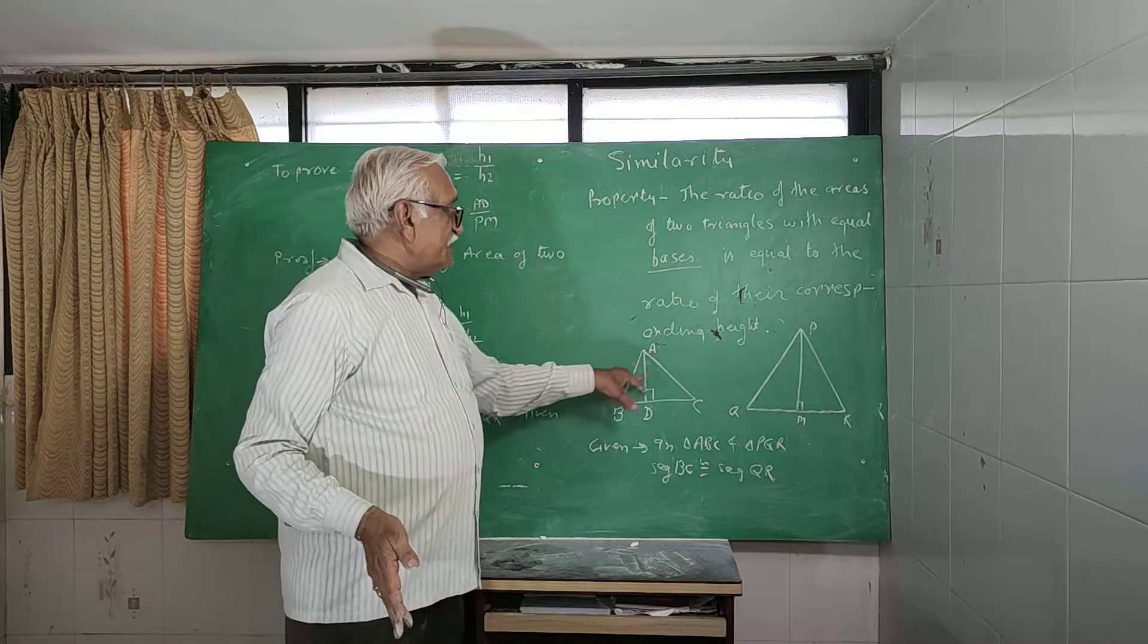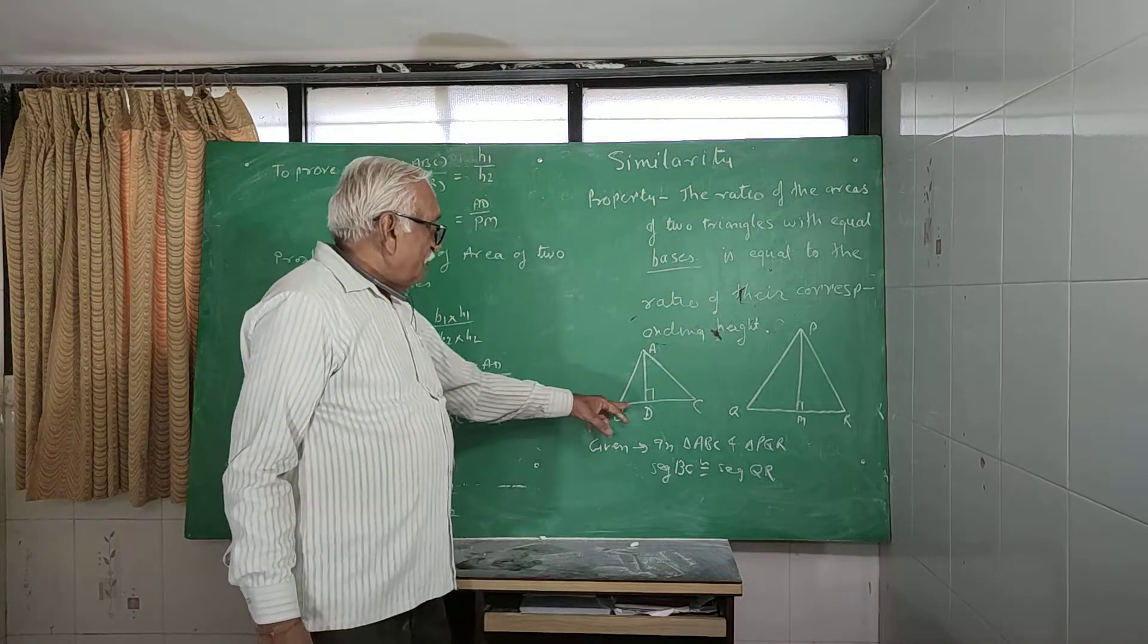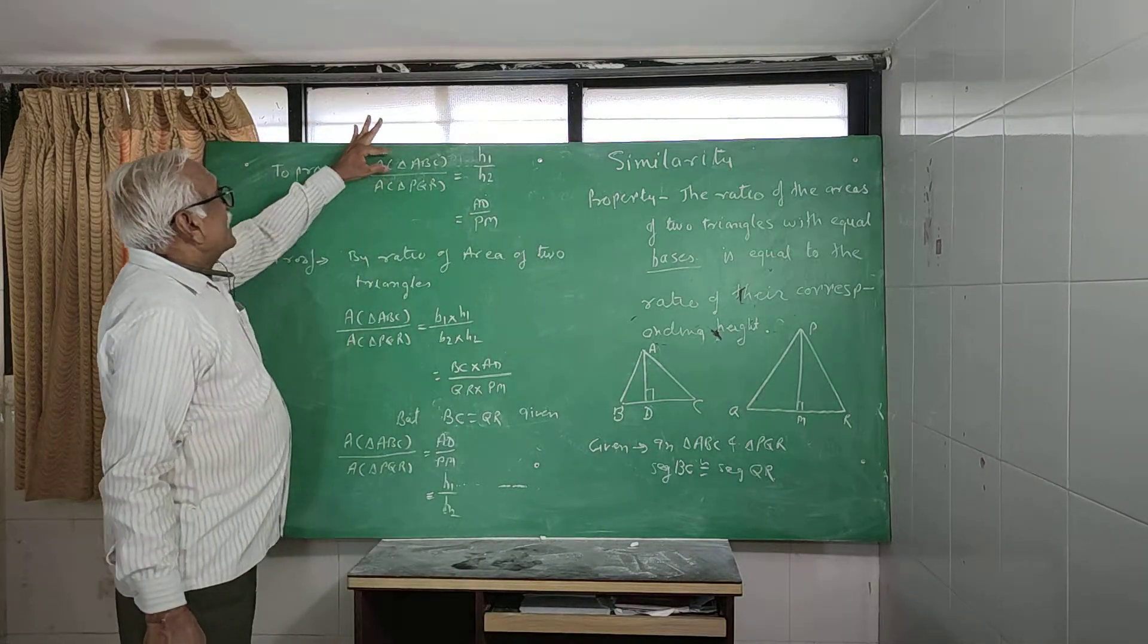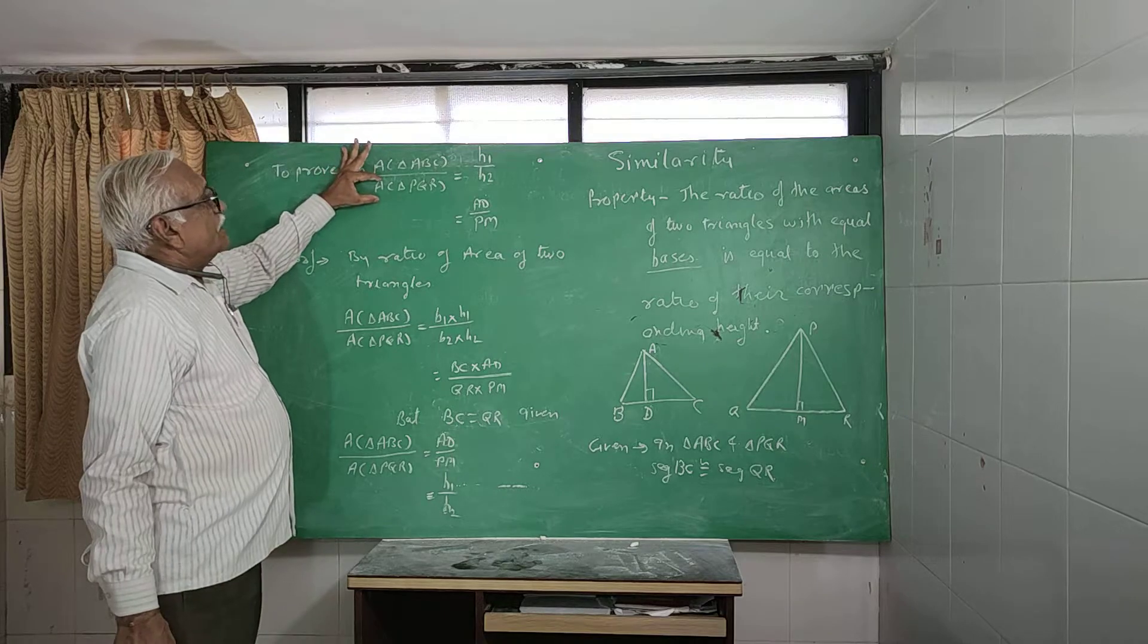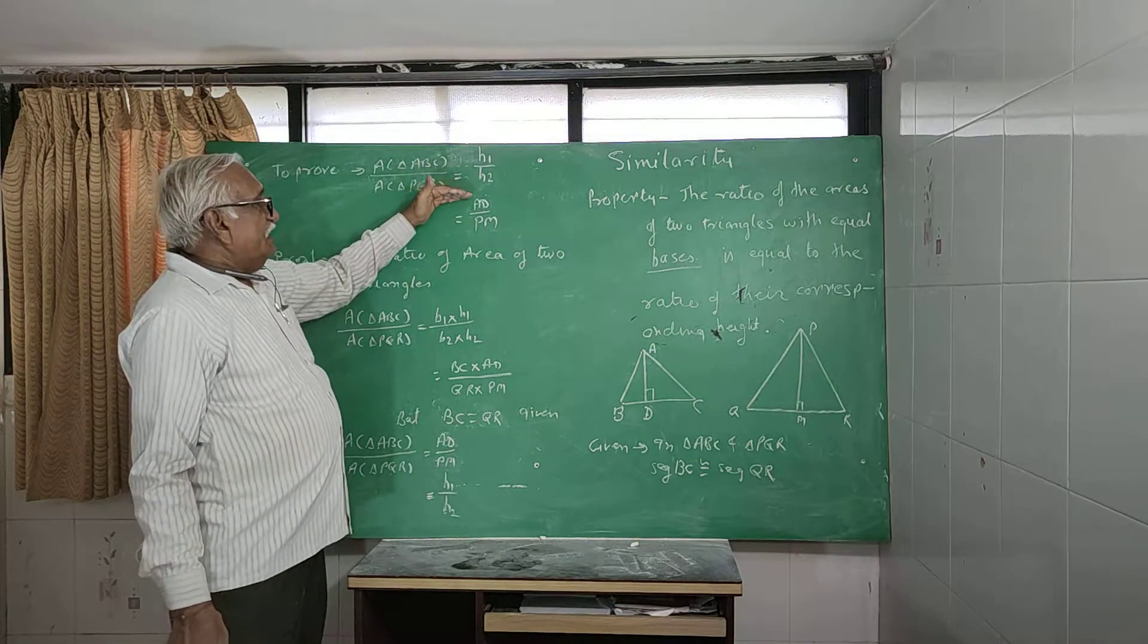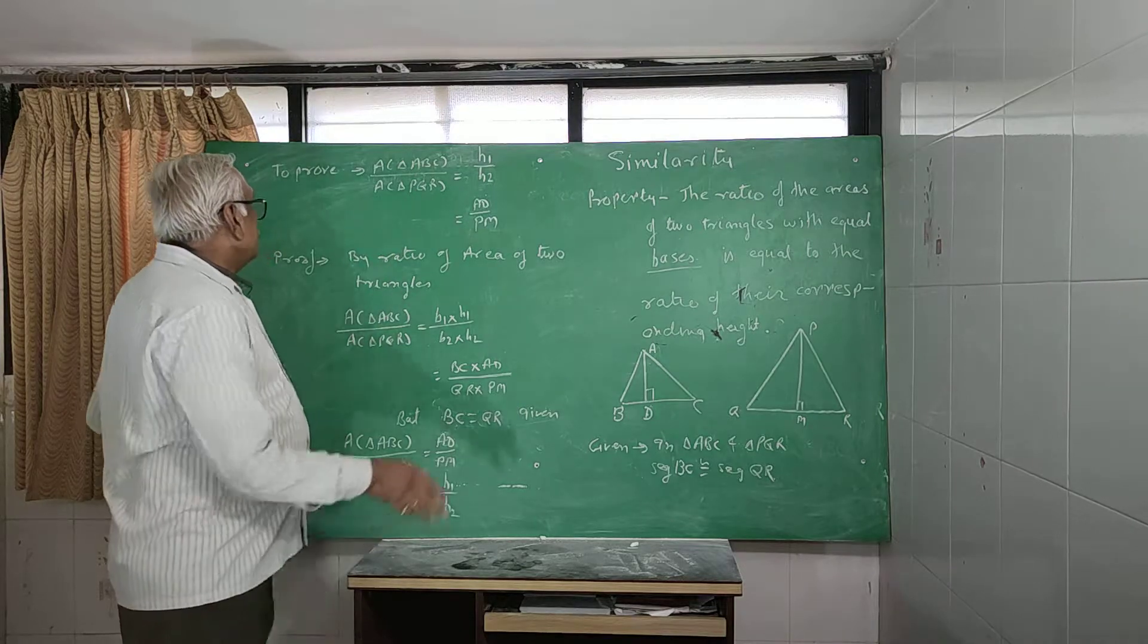Now in triangle ABC and triangle PQR, base BD congruent base QR. We have to prove area triangle ABC upon area triangle PQR equal to H1 upon H2, that is AD upon PM.